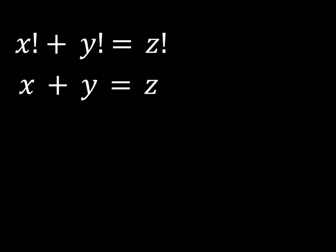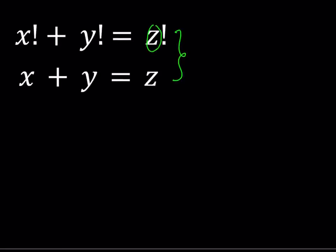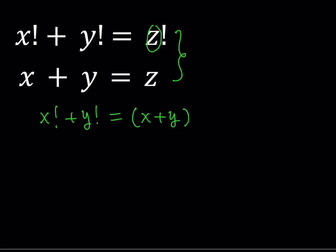So what do we do? Since we're given the system, we can just go ahead and replace z with x plus y in the first equation. That makes sense, doesn't it? So that gives us x factorial plus y factorial is equal to x plus y factorial. So basically, after finding the values of x and y, we can just go ahead and add them and find the values of z.